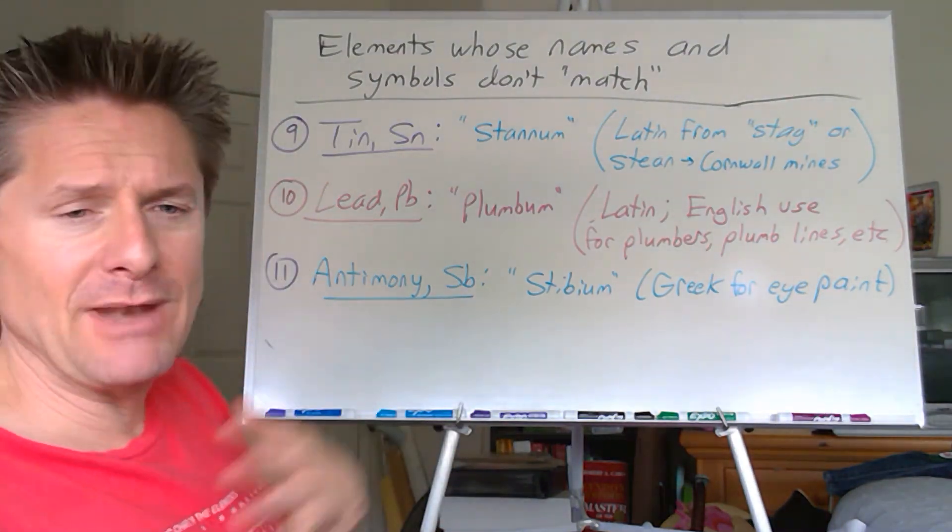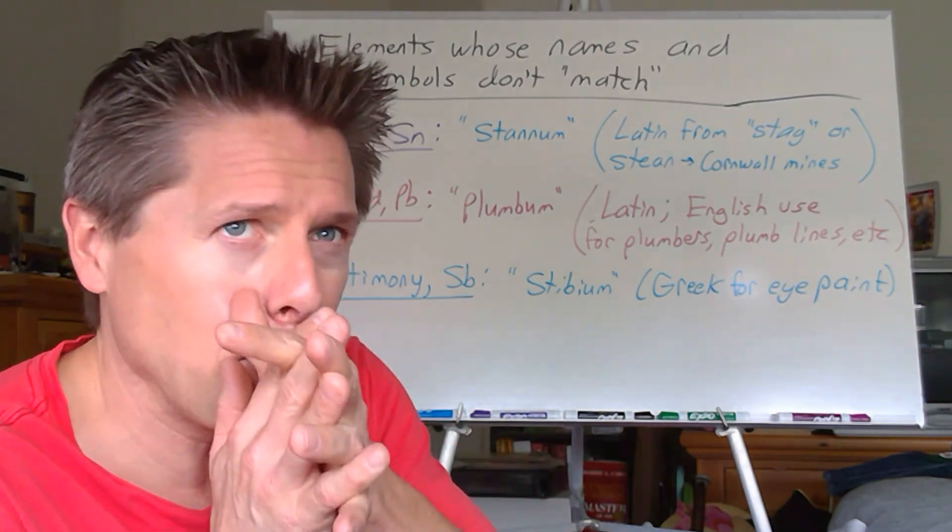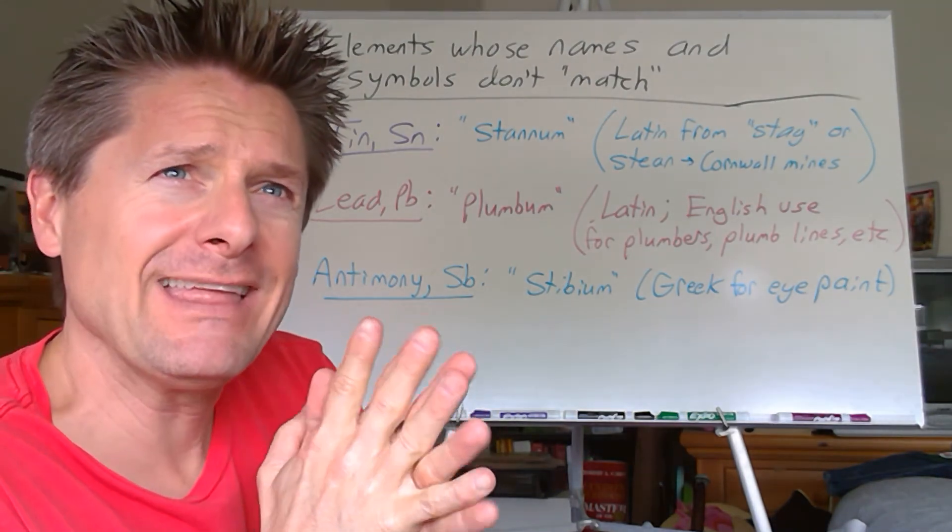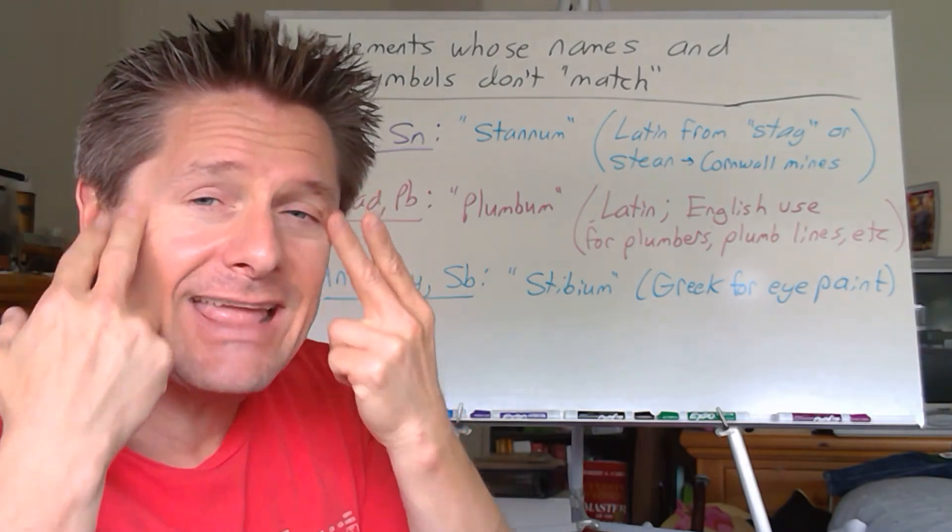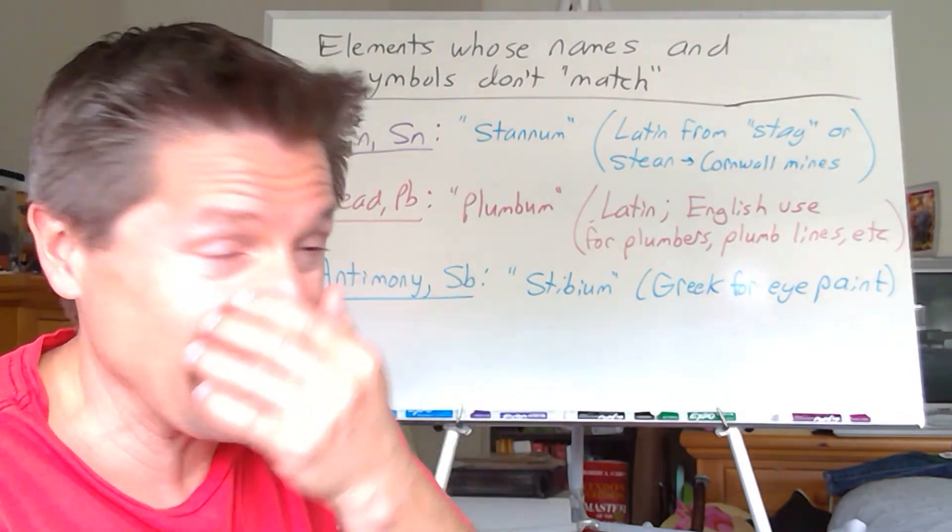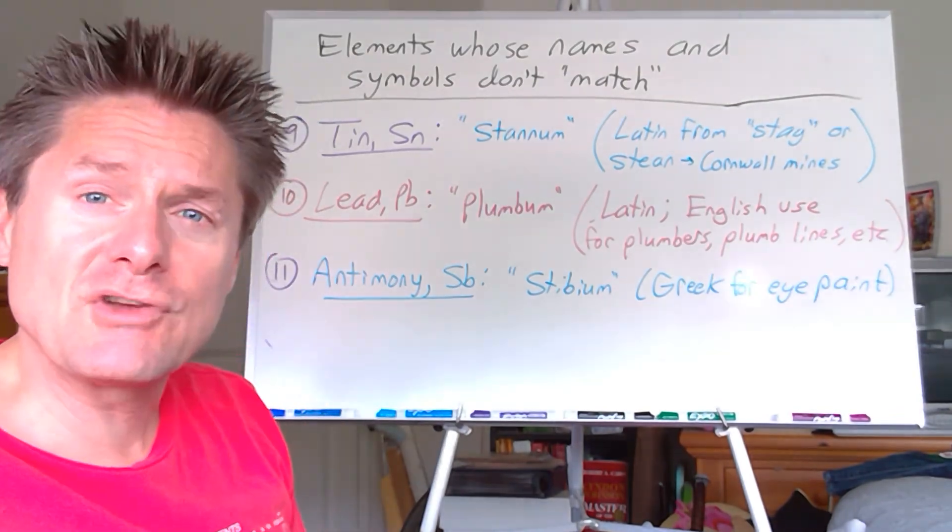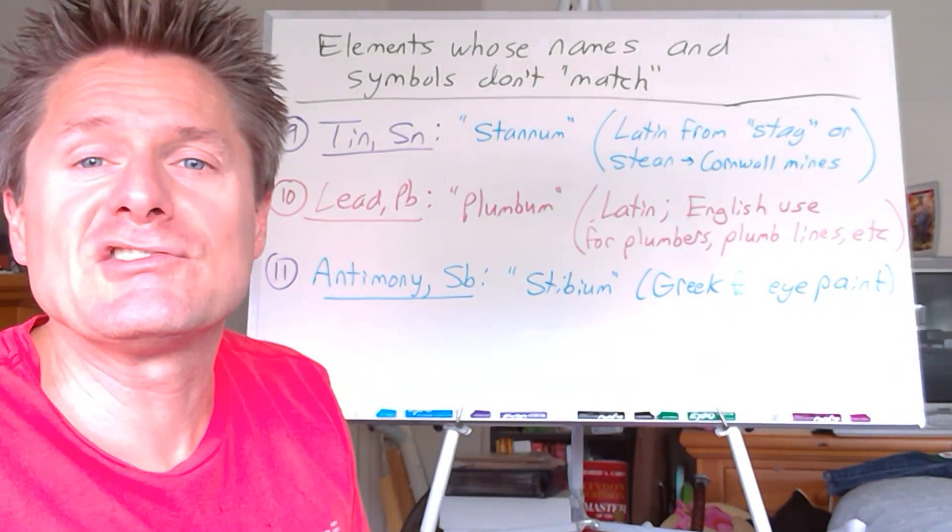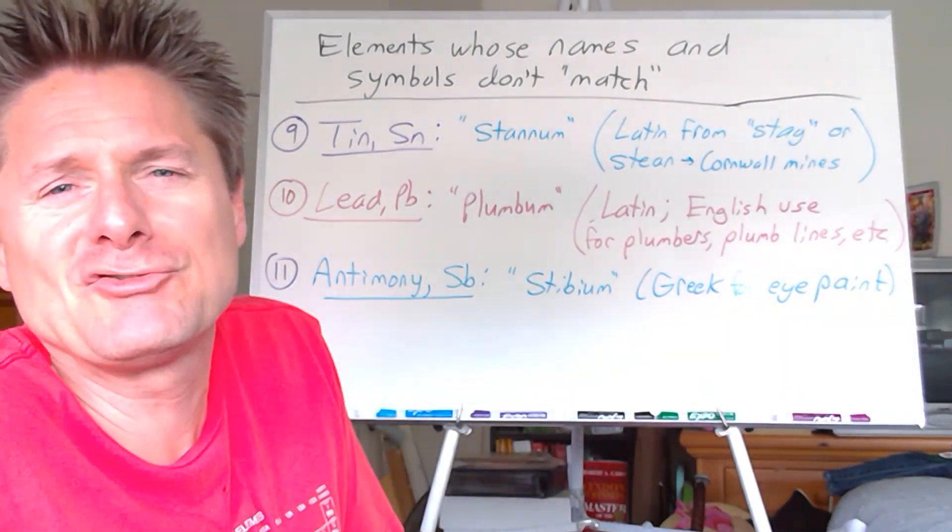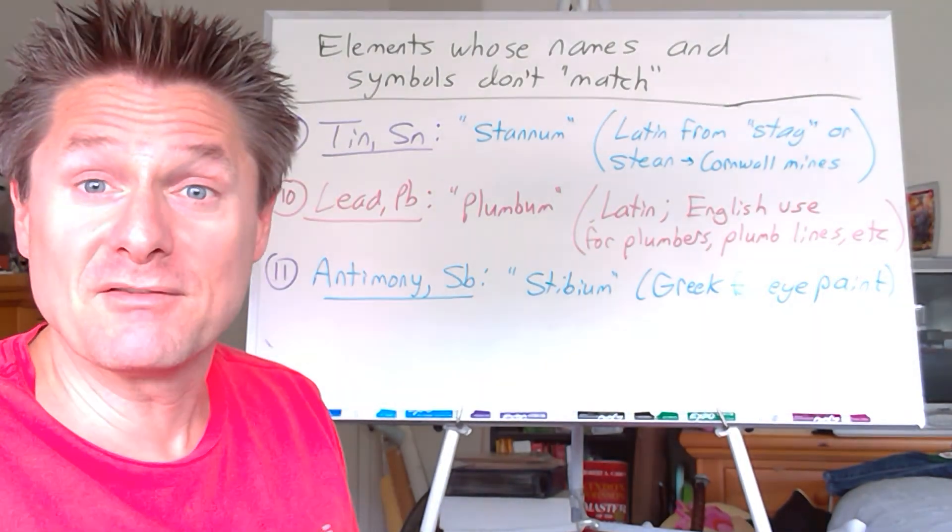And then last but not least, antimony, Sb, from stibium. I'm not much into Greek history—there's just not enough—you need to be immortal to read all this stuff. But I think they used antimony in some of their paints and eye colors and things like that. So this is kind of a Greek derivation for eye paint or eye color. Stibium. Interesting stuff. I haven't done a tremendous amount of historical research on it, just a couple little things here and there. But it's just interesting to see where the symbols come from that don't match the name. So anyway, that's a little intro to elements for you. Take it or leave it, not critical. And let's move on to some properties of matter.